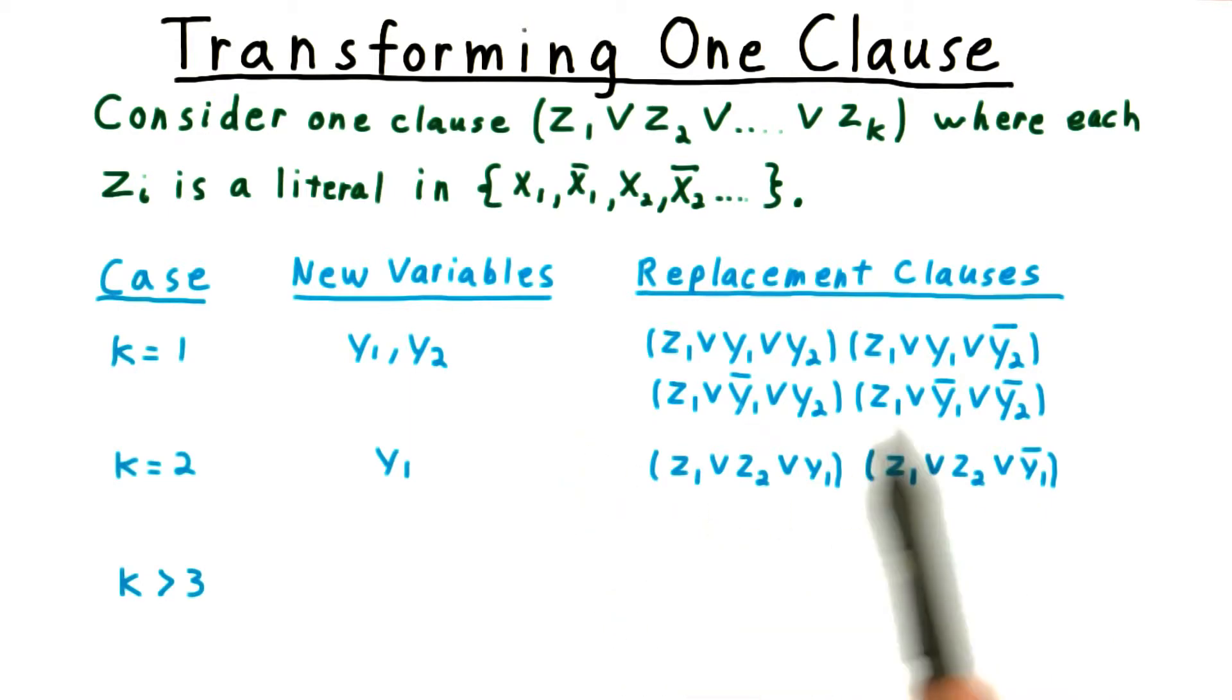Note that if Z1 is true, then all four of these clauses are true as well. On the other hand, for any given truth assignment for Z1, Y1, and Y2,